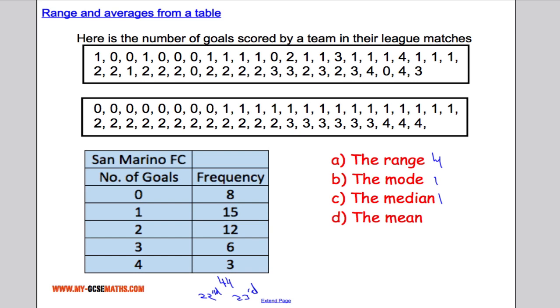So let's just clear that out. I'm going to do the value times by the frequency. For each one, 1 times 15 is 15, 2 times 12 is 24, 3 times 6 is 18, and 4 times 3 is 12.